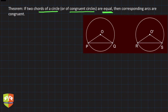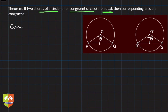Why are we talking about one circle and two congruent circles? It is the same case, because you can have two equal chords within the circle itself, or you can have two chords in two different circles where both circles are congruent — that is, they have the same radii. So let's take this general case where we have two circles.